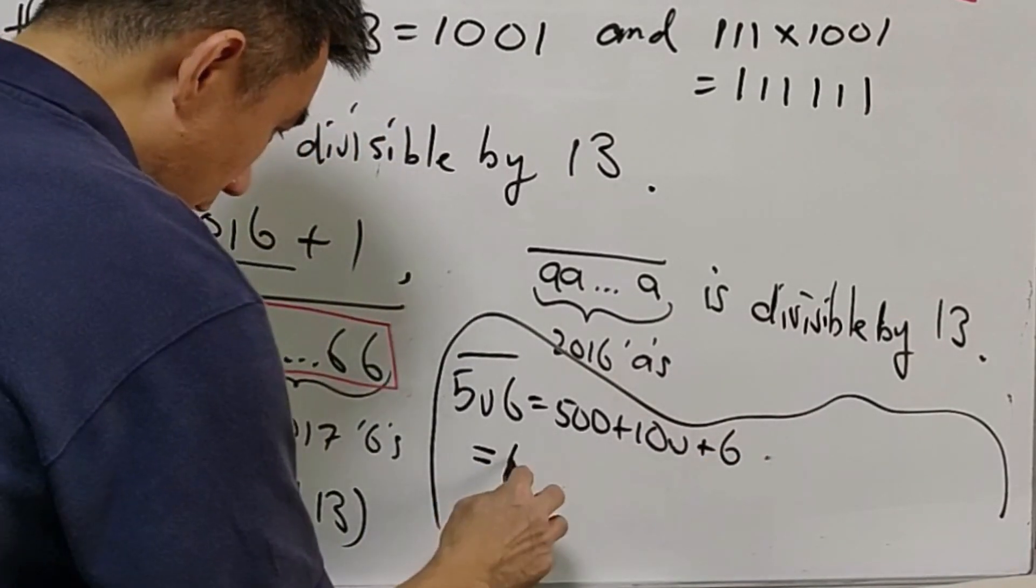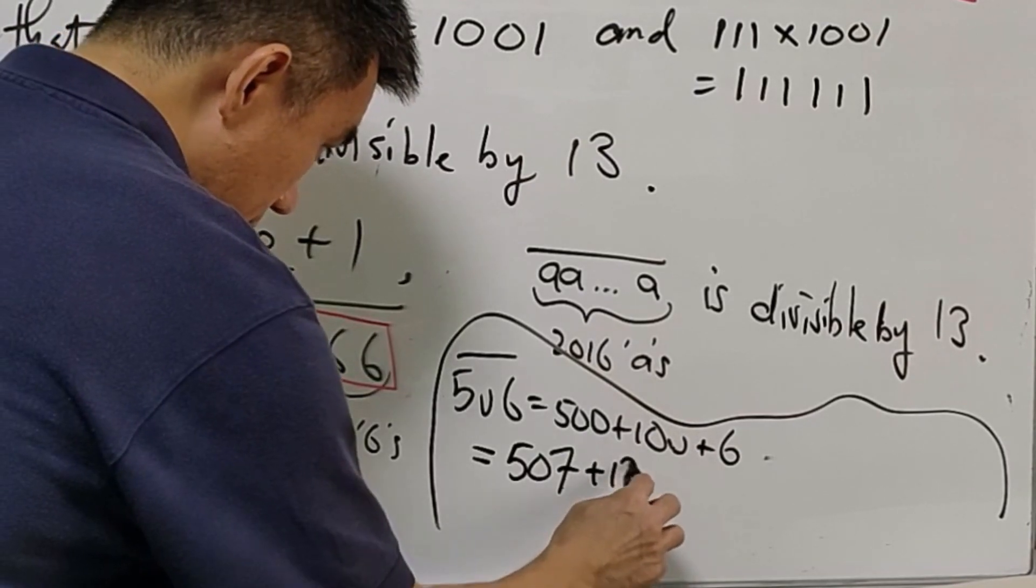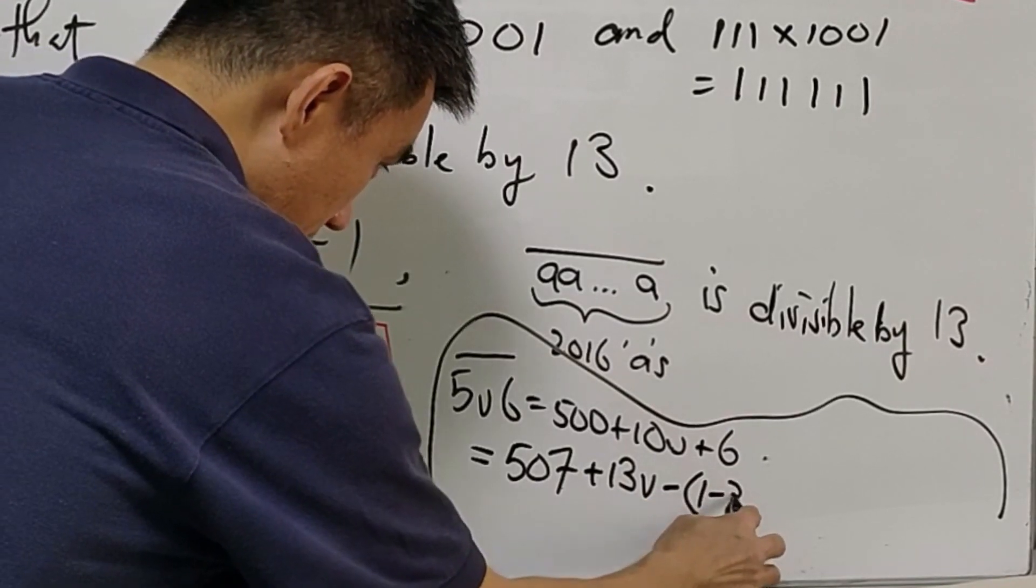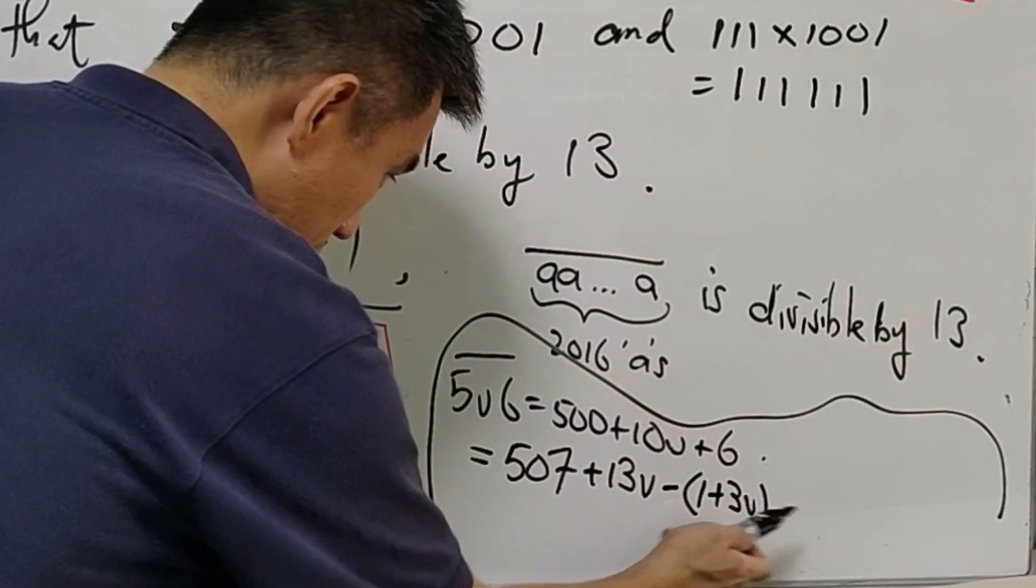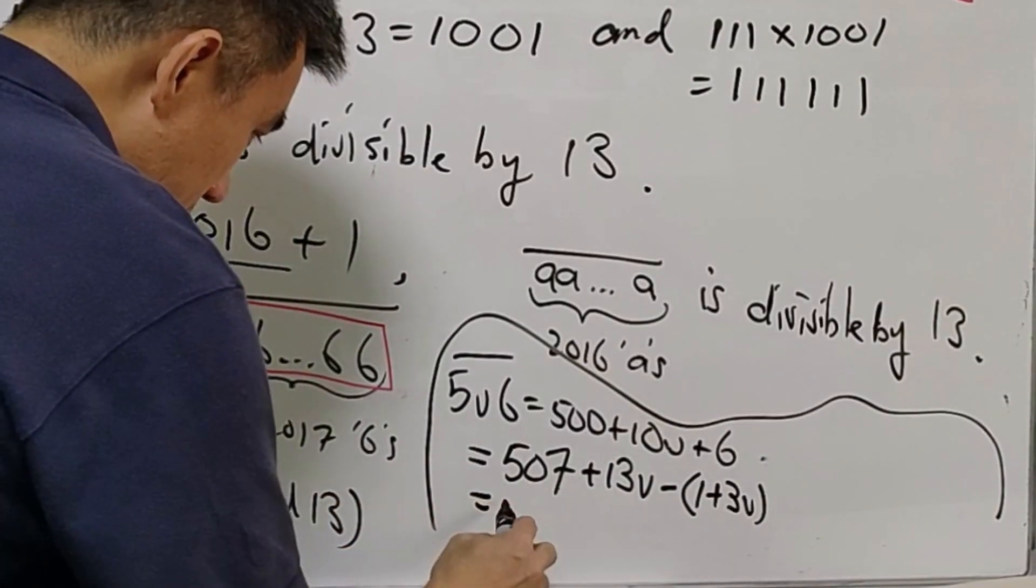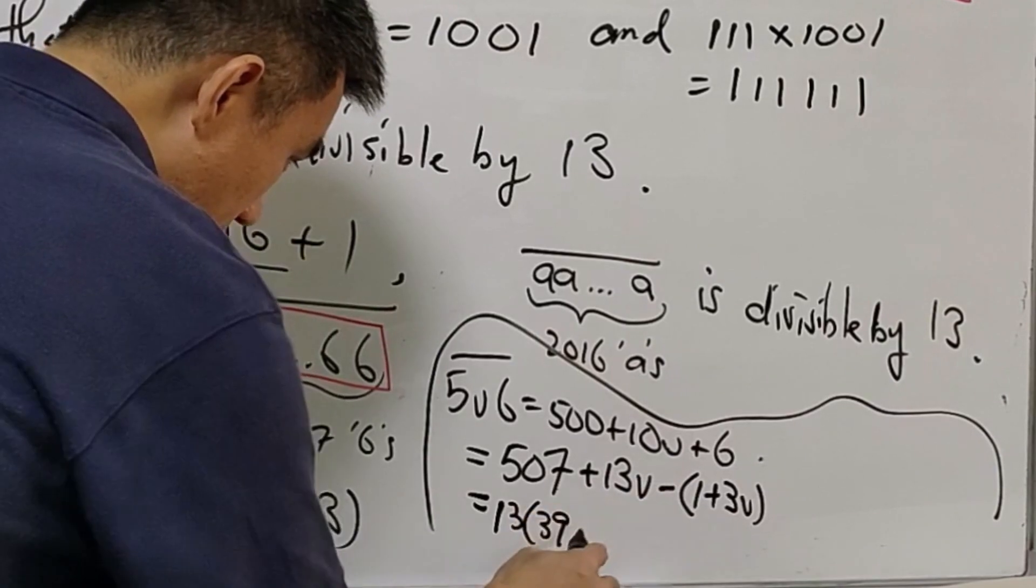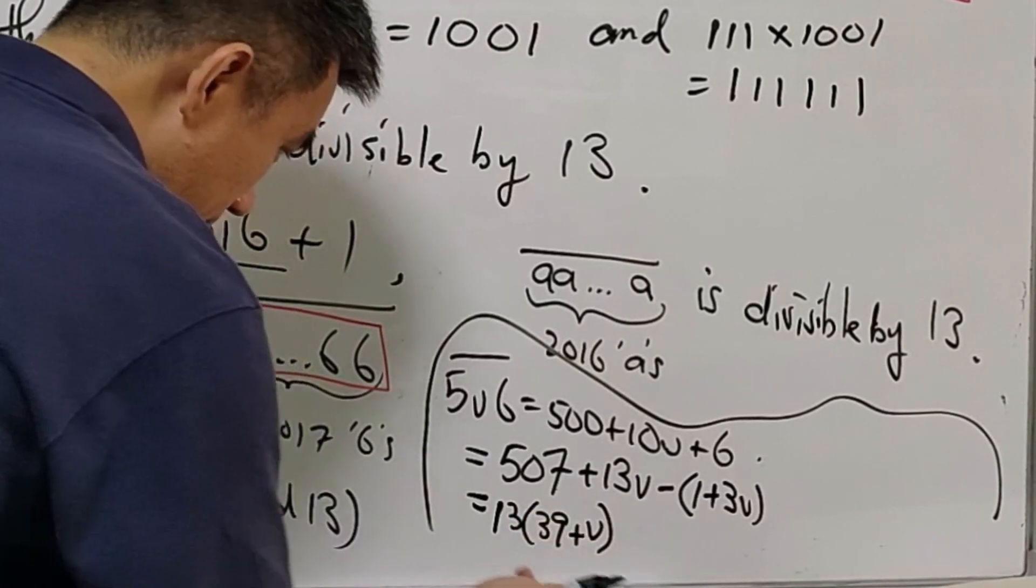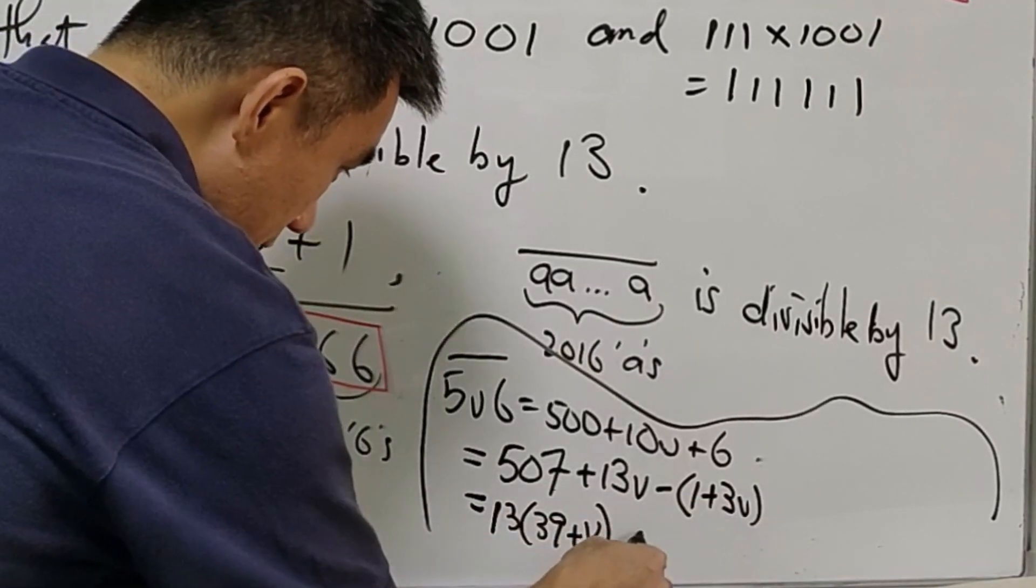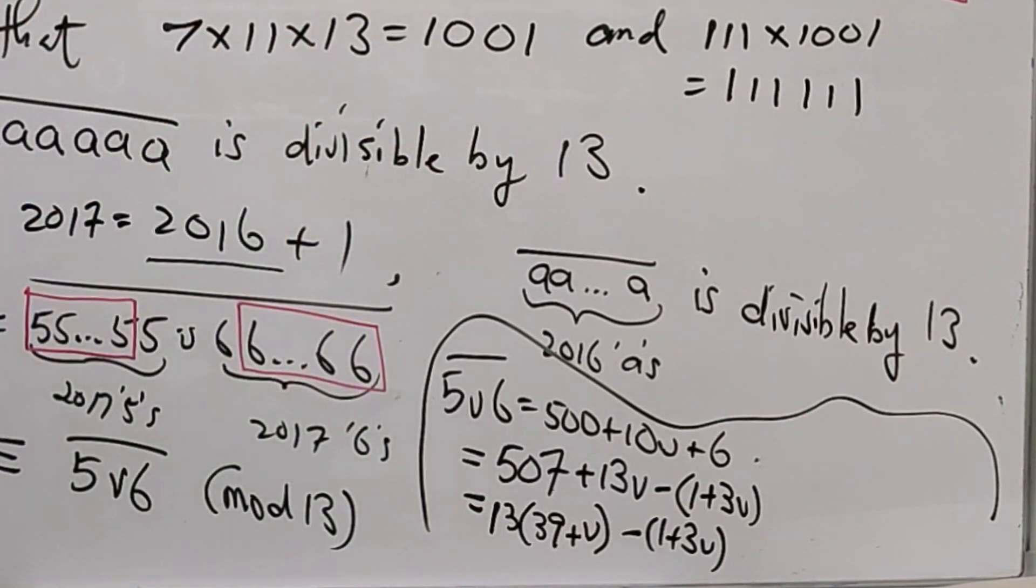And this can be written as 507 plus 13V minus 3V. And 507 is divisible by 13, 13V is divisible by 13, and therefore 1 plus 3V has to be divisible by 13.